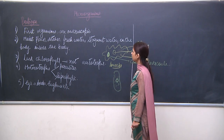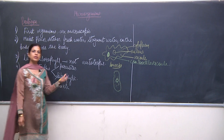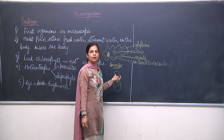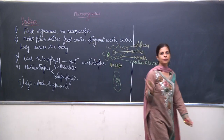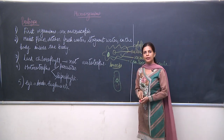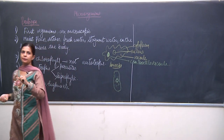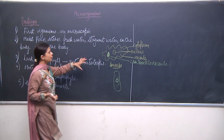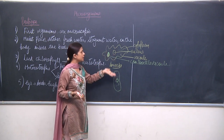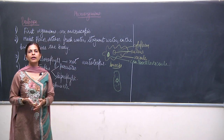How are protozoans useful? They are very small and can be consumed as food by higher organisms. What do they feed upon? They feed upon phytoplanktons — phyto means plant — so phytoplanktons are very small, microscopic plants. Protozoans feed upon phytoplanktons and then in turn are consumed as food by higher organisms.